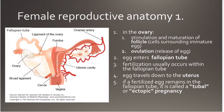The major organs that are involved in female sexual anatomy are going to be the uterus, the fallopian tubes, and the ovaries.